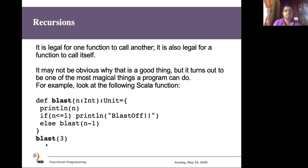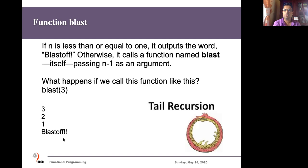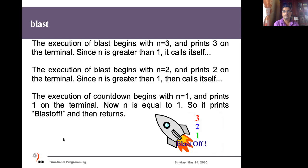What happens if you call the function 'blast' with the number three? First, it prints the number three. Since three is not less than or equal to one, it calls 'blast' again with number two. Then it prints two, then one, and finally prints 'blast off'. You can see it creates the same function call in several rounds and then stops.